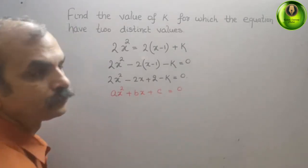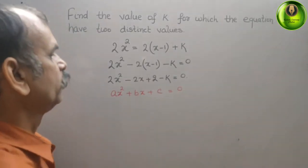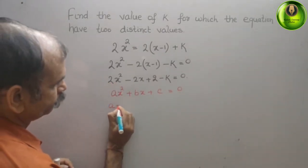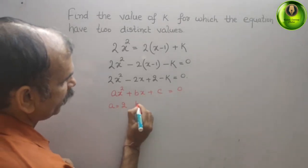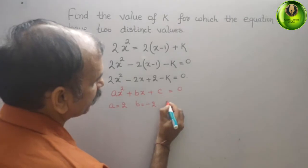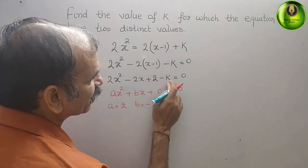So now you can compare it: a is nothing but 2, b is nothing but -2, and c is 2 - k.